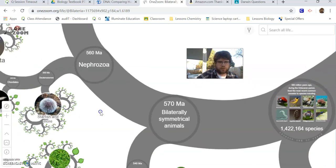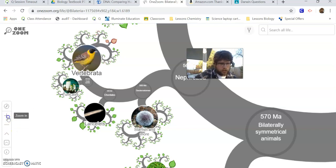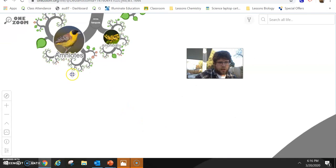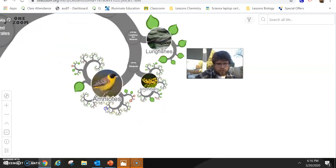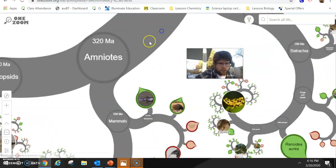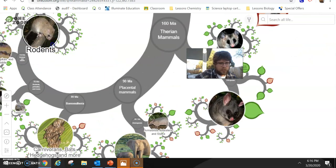So we have bilateral symmetry and we are vertebrates. We've got a backbone. So let's zoom in there. Alright. Okay. We are amniotes. That's about our eggs. Our eggs form. Mammals, rodents, primates, and more.